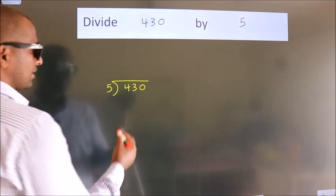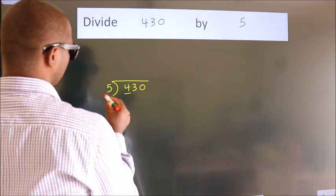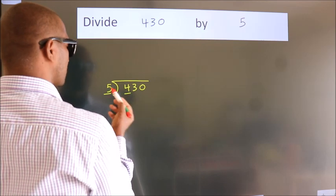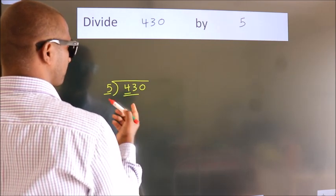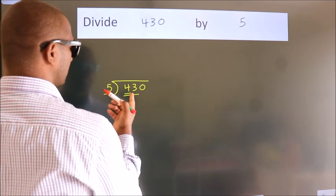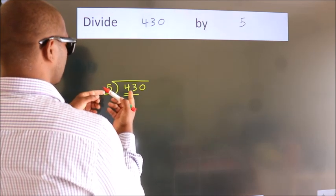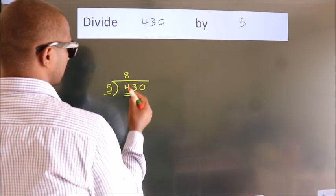Next, here we have 4, here 5. 4 smaller than 5. So we should take two numbers, 43. A number close to 43 in 5 table is 5 times 8, 40.